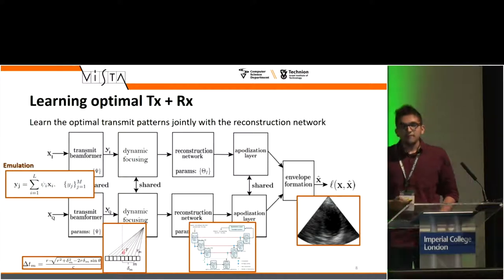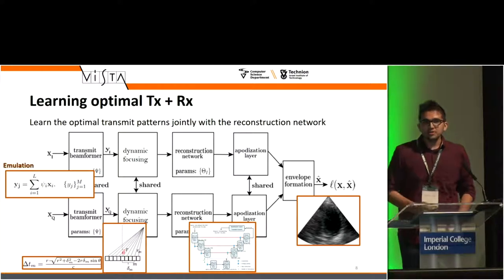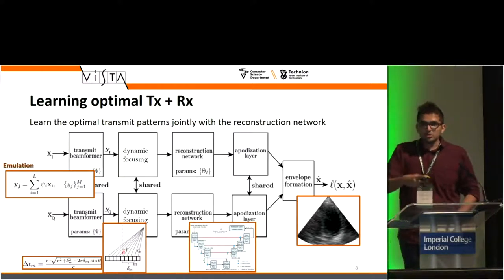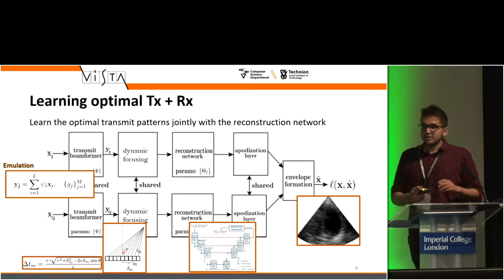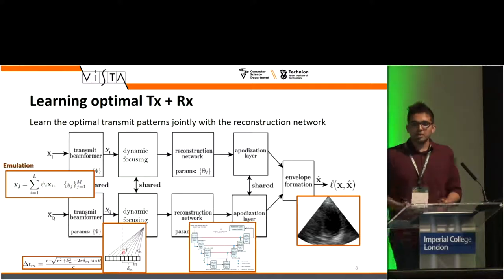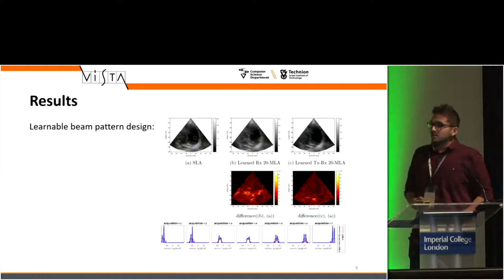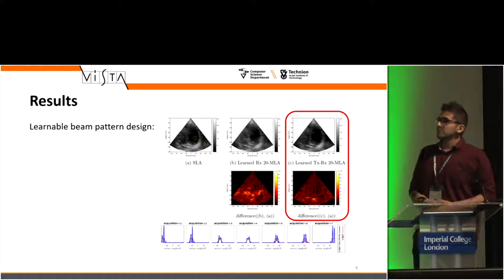If we acquire ultrasound in the first harmonic mode, the forward model is fairly linear — it's a linear combination of the transmit beams acquired from a slow ultrasound scan. Then we receive the signal, do dynamic focusing on it, which is implemented as a spatial transformer layer, and then we do the same reconstruction as before. The results show it performs significantly better.